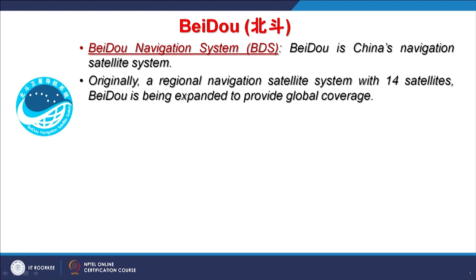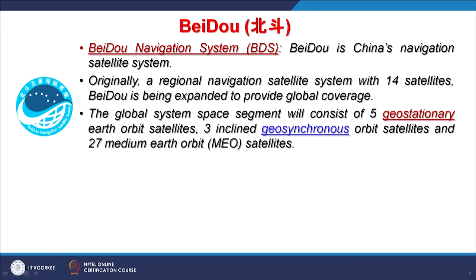Originally this system was planned to have a regional navigation satellite system with only 14 satellites, and now it has been expanded to a global scale. So it is also a global positioning system like GPS and GLONASS. The global system consists of 5 geostationary earth orbit satellites.